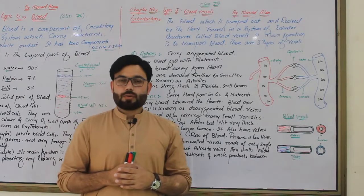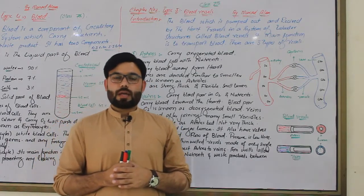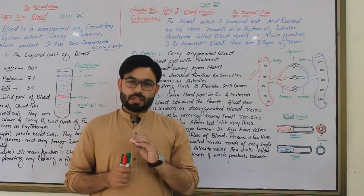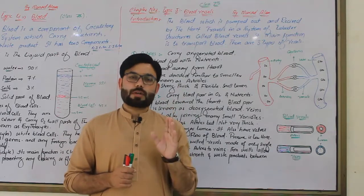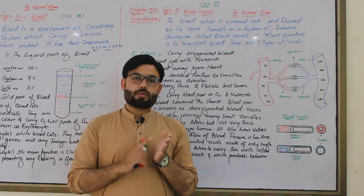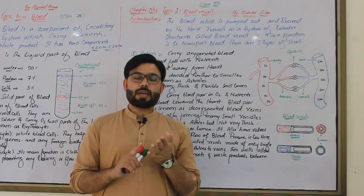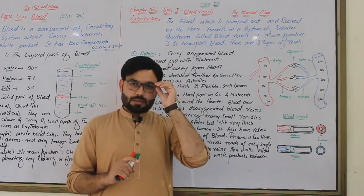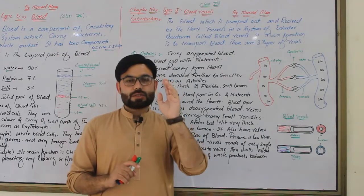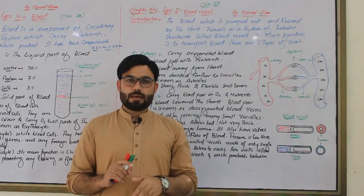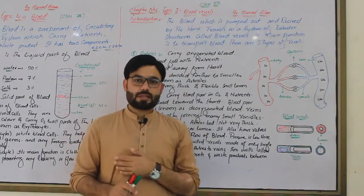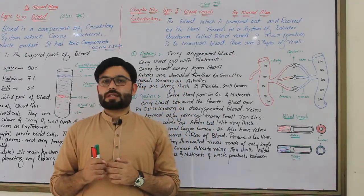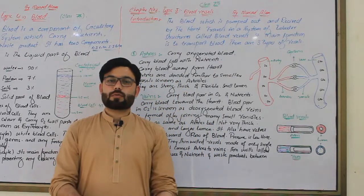Arteries carry oxygenated blood, which is not bad blood — it contains oxygen. Veins carry deoxygenated blood, which contains carbon dioxide.